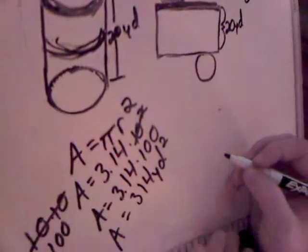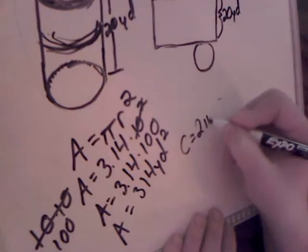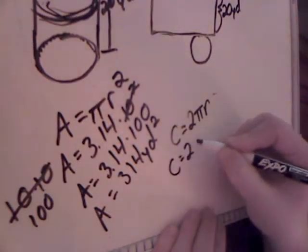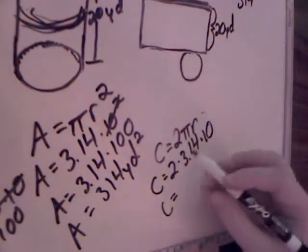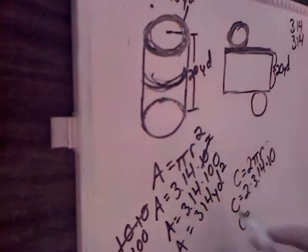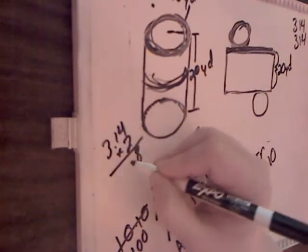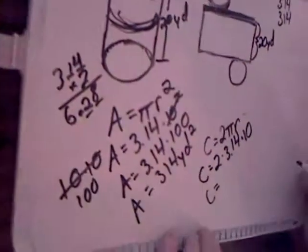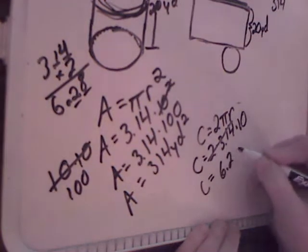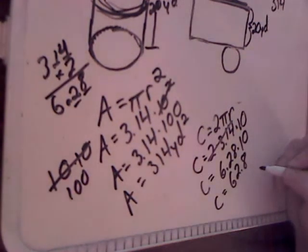We're going to use the circumference formula. We have the radius, so we're going to use 2πr — 2 times 3.14 times the radius, which is 10. We're going to multiply 2 times 3.14. 2 times 4 is 8, 2 times 1 is 2, 2 times 3 is 6, and we have our decimal. So 2 times 3.14 is 6.28. Multiply that times 10 — we have 62.8 yards.